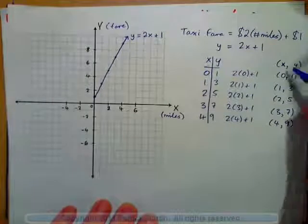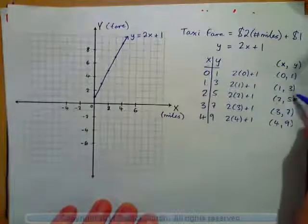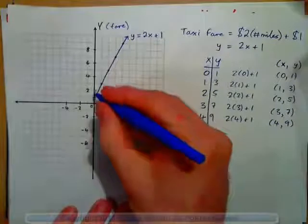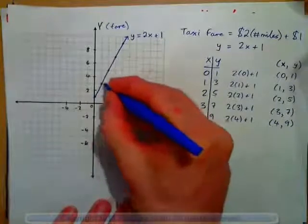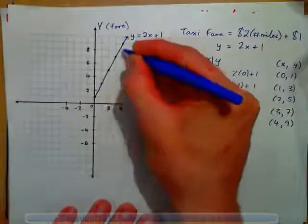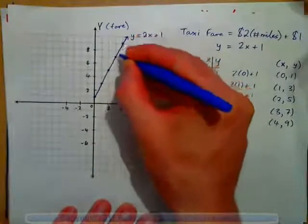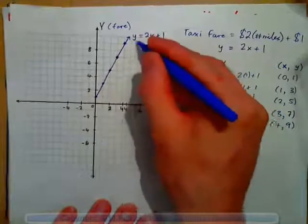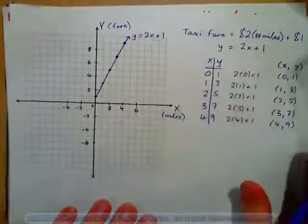The ordered pairs would be (0,1), (1,3), (2,5), (3,7), and so on. And then we graph the line. Plot the points, draw a straight line through them. This is the line y equals 2x plus 1.